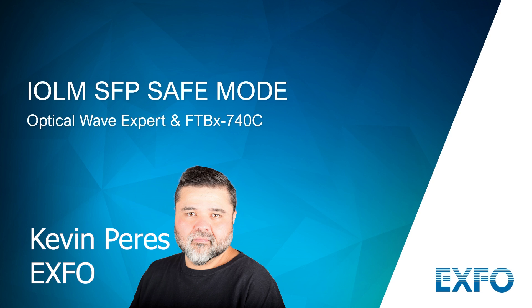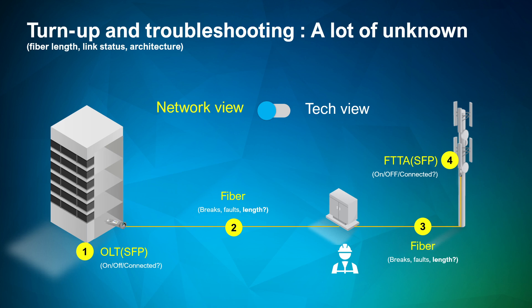When we dispatch technicians to test, turn up, and troubleshoot, one thing we want to avoid is introducing problems when we're trying to solve them. This is something we started to encounter with damaged SFPs from elevated light levels from OTDRs and VFLs. From a network view, when we're turning up and troubleshooting, this is what a network might look like — you have a transceiver on one end, a transceiver on the other end, and a length of fiber in between. Is there a transceiver plugged in? Is there not one plugged in? Does it go to a radio? These are all part of the network view.